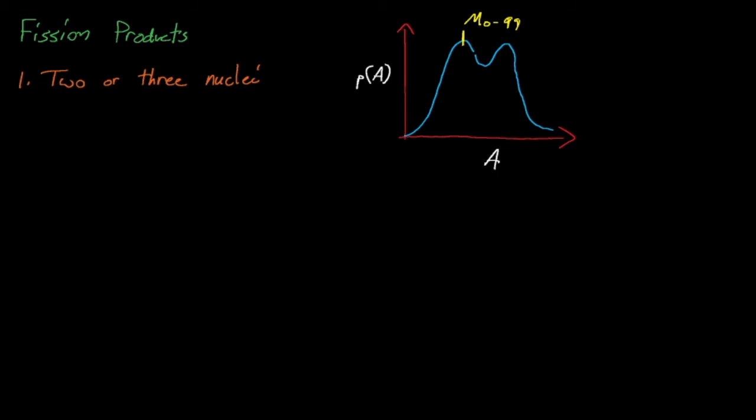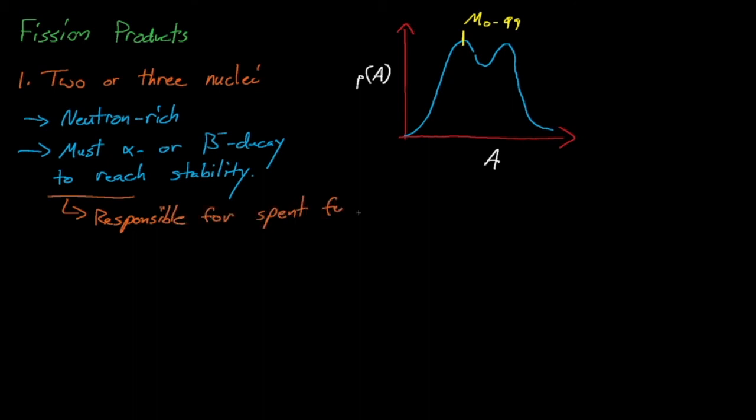In general, nuclei require slightly more neutrons than protons to remain stable, which means that when heavy uranium nuclei fission, their fission products are going to be very neutron-rich. In fact, more neutron-rich than they want to be to remain stable. So to approach stability, these fission products will undergo several rounds of radioactive decay, which is generally alpha or beta minus decay, until they reach a stable Z to A ratio. This gradual series of radioactive decays is responsible for the overwhelming majority of radioactivity in spent nuclear fuel.